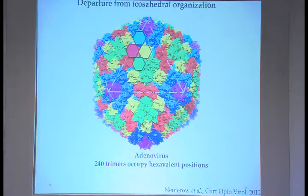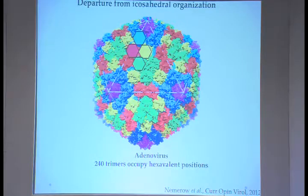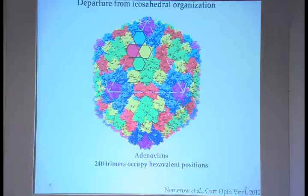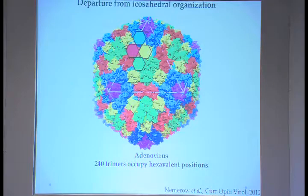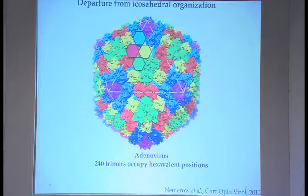Another departure from icosahedral organization is in adenovirus. In the hexavalent positions, instead of a hexamer, there are 240 trimers. There may be departures in some cases from icosahedral organization, but more or less the general outline remains correct.